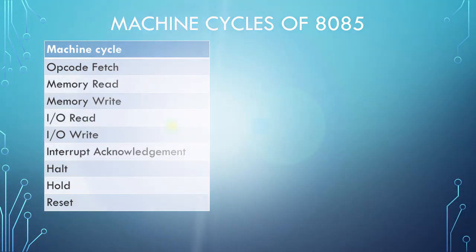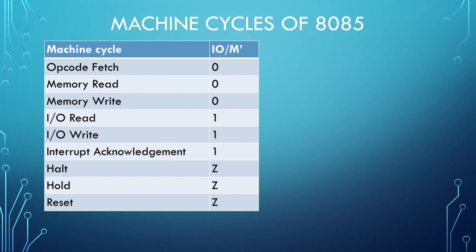Now we will see the corresponding values of different control and status signals. We will start with IOM bar. IOM bar goes low when the microprocessor performs memory related operations and it goes high when the microprocessor performs IO related operations. So for opcode fetch, memory read and memory write it is low, and for IO read, IO write and interrupt acknowledgement — which again is an IO related operation — its value is high. For remaining machine cycles its value is Z.